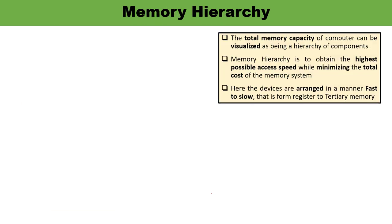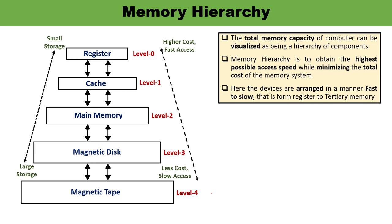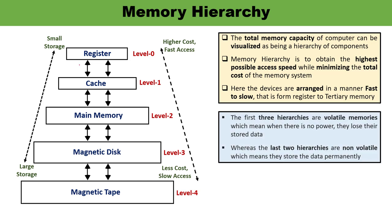The memory hierarchy is divided into five levels depending on speed and use. The processor can move from one level to another based on its requirement. These five hierarchies are: register, cache, main memory, magnetic disk, and magnetic tape. The first three — register, cache, and main memory — are volatile memories, meaning they lose data when power is turned off, while magnetic disk and magnetic tape are non-volatile and can permanently store data.